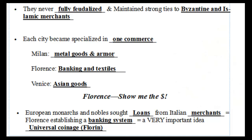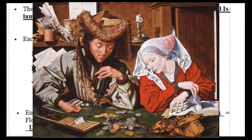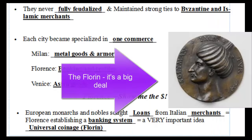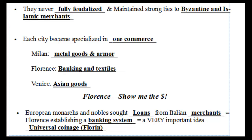Florence becomes the banking center of Europe. By the end of the Middle Ages, European kings looking for loans to pay for wars and the Crusades are going to borrow money from Italian merchants. Florence establishes a very reliable banking system, and a big part of this is the concept of universal coinage — using the same money everywhere. Just like the US uses the same dollar bill in Tulsa, Anchorage, or New York City, the Florin becomes the first European money that people outside Florence were willing to use as proper payment.